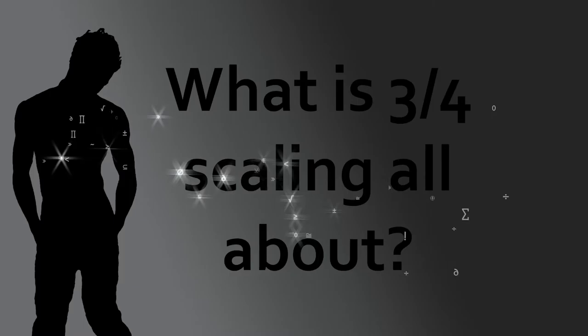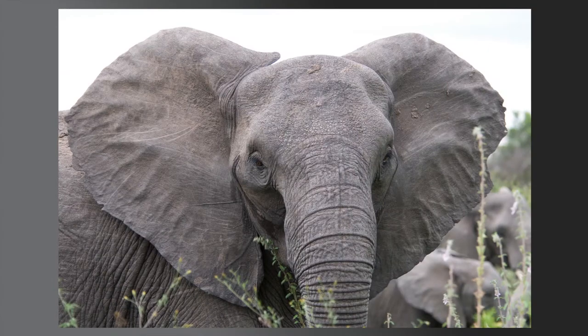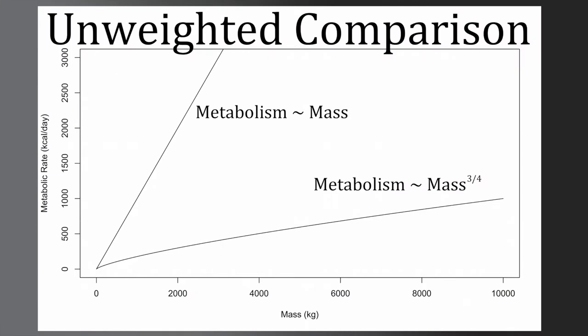Three-fourths scaling stems from very early observations on how metabolic rate changes with the size of an animal. As you go from a very small animal like a mouse or a shrew all the way up to an elephant or a blue whale, if you record how much energy or food that animal needs, it's not in direct proportion to its body size. If you double the size of a mammal, you don't double the food or metabolic requirements. You actually scale the amount of resources organisms need to its size raised to the three-fourths power.